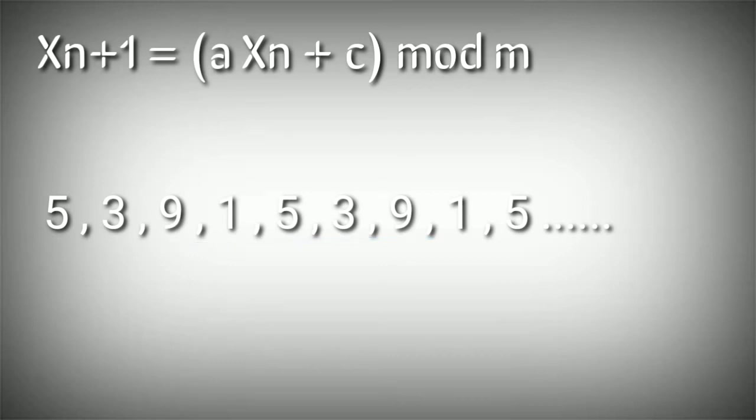The advantage with this method is that if we know the parameters A, C, M and the seed, we can reproduce the whole series. That's the biggest advantage. And further, if we choose the good parameters A, C, M and the seed, the period can be very, very large.